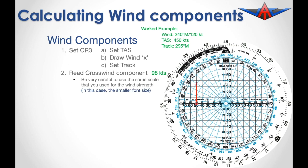It is vital to remember that we use exactly the same font size scale as we did before. Because we used the small font size when plotting the wind, we are going to read the small font size here. You could easily make an error by reading that as 49 knots instead of the 98 knots if you didn't pay attention to this point.